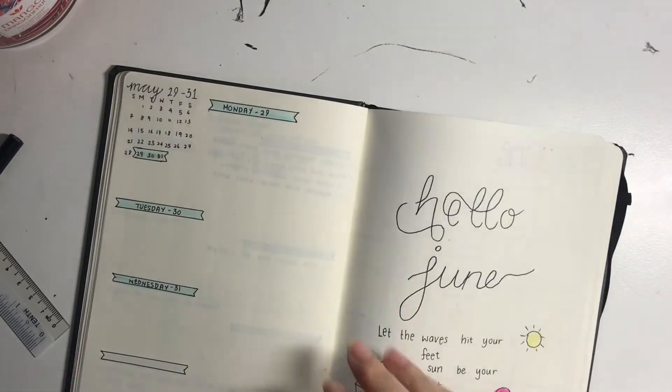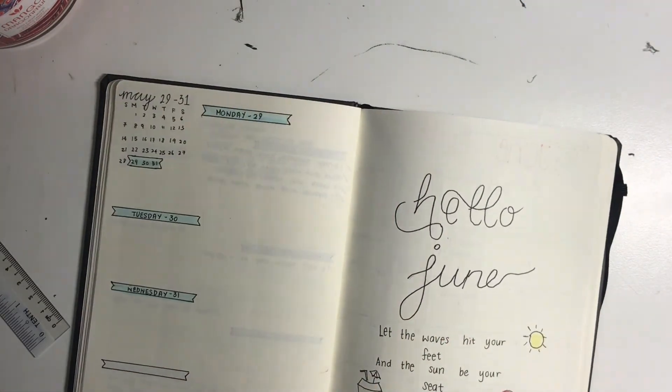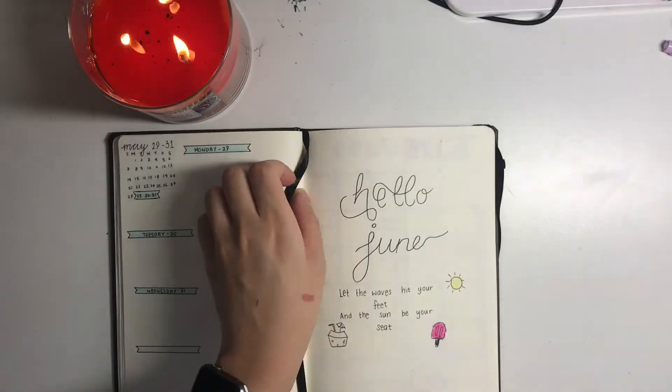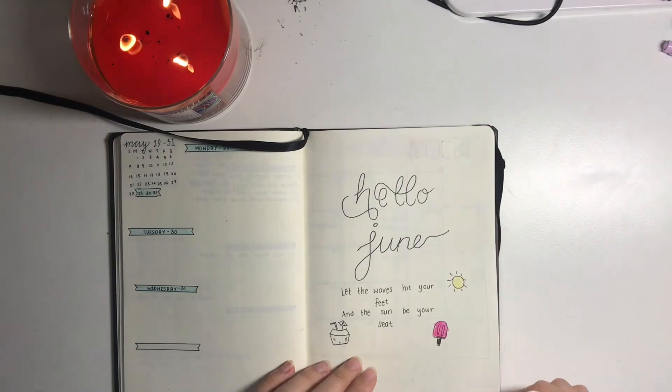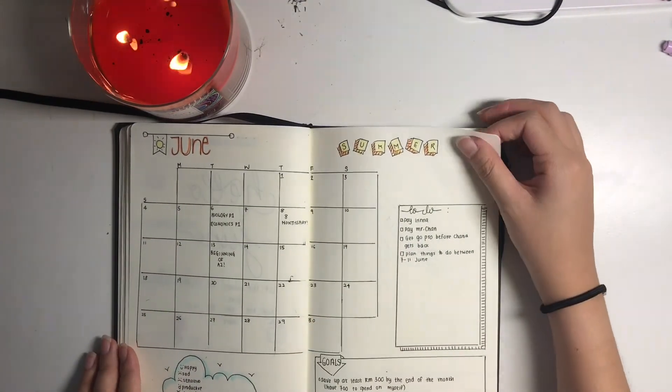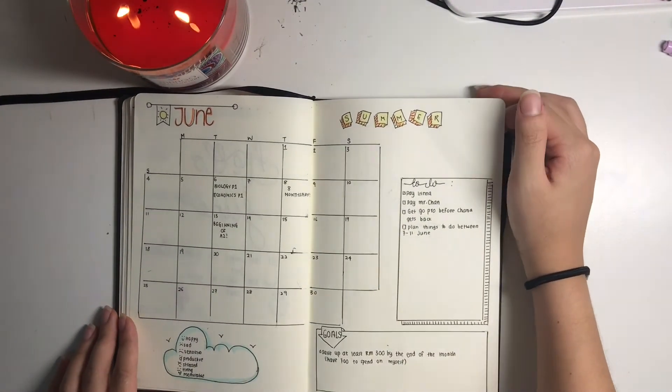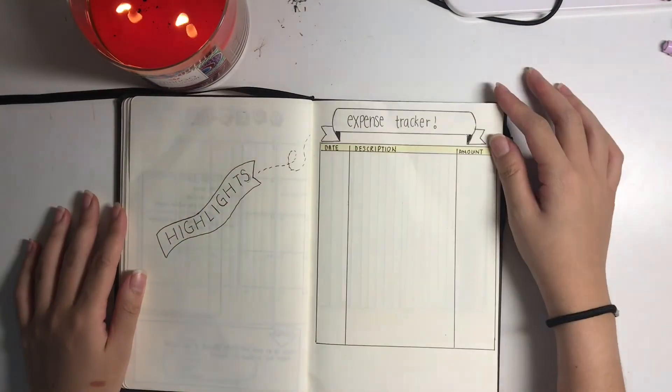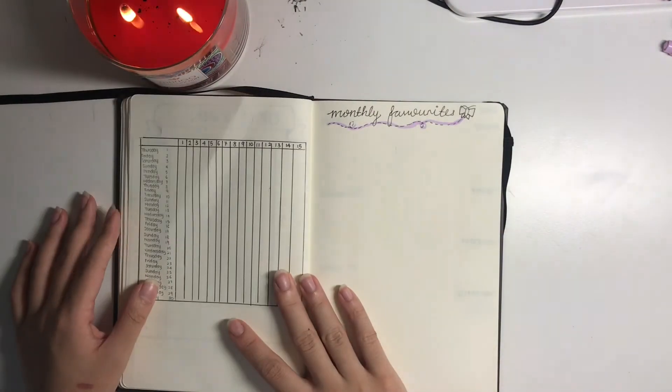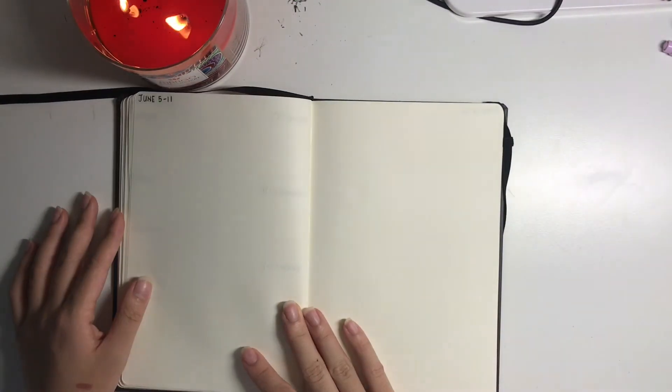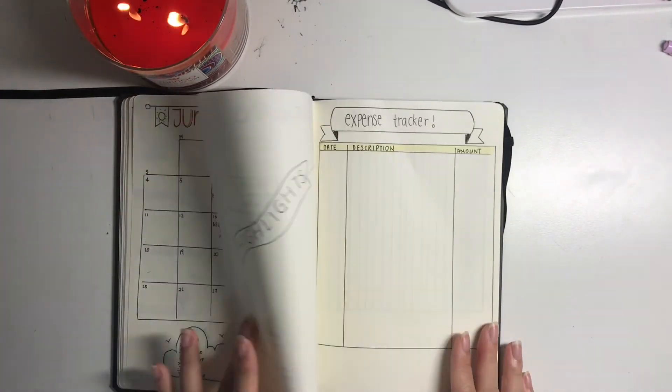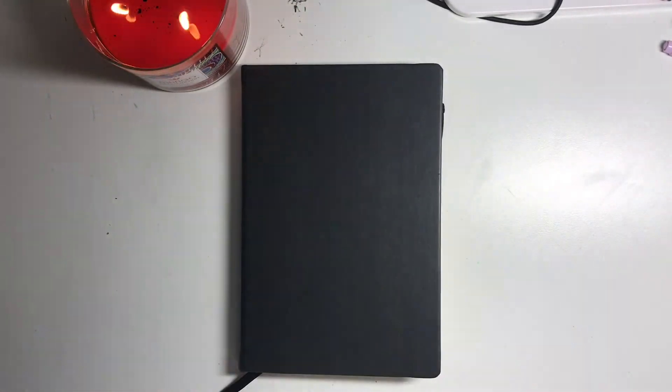So yeah guys, that is basically it for my June spread. We're just going to really quickly go through it. So first of all I have my cover page - little doodles and a quote. Then I have my monthly log, colorful, has my to-do list, goals, and mood tracker. Then I have my highlights and expense tracker page, my sleep tracker, my monthly favorites, and then my weekly log for the rest of the month. So thank you guys so much for watching, I'll see you guys in my next video, bye!